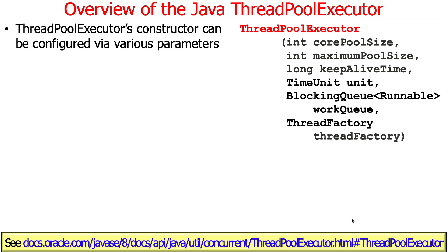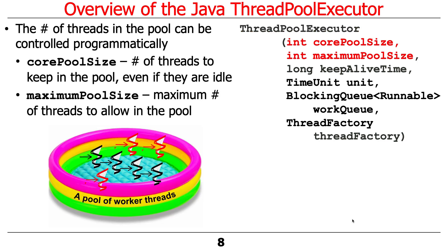There are a bunch of different ways of changing the behavior of thread pool executor using the constructor, which has a lot of parameters. We're going to talk through the different parameters that can be passed to thread pool executor and see how that changes the semantics of the class.